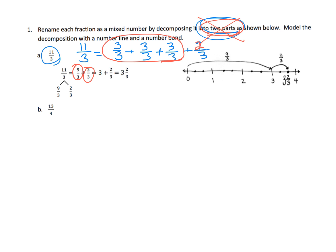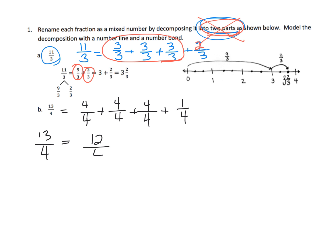For example, thirteen-fourths. We might say that's four-fourths, plus four-fourths, plus four-fourths — so far that's twelve-fourths — plus we have one-fourth left over. Now we can do what the directions officially asked: that's twelve-fourths plus one-fourth, and we know that is three wholes and one-fourth.